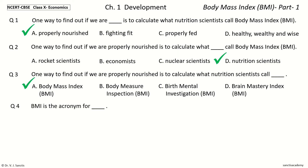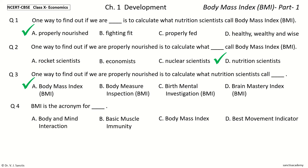Question 4: BMI is the acronym for dash. The options are: Body and Mind Interaction, Basic Muscle Immunity, Body Mass Index, Best Movement Indicator. And the answer is Body Mass Index. So BMI is the acronym for Body Mass Index.